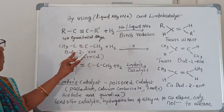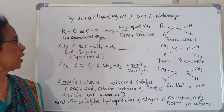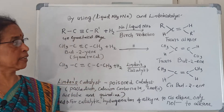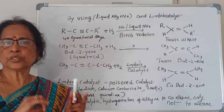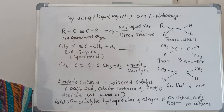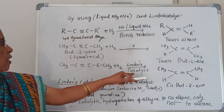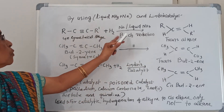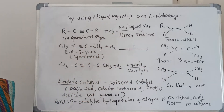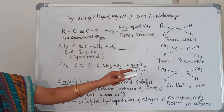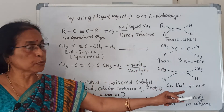So remember: sodium and liquid ammonia gives trans-alkene, and Lindlar's catalyst gives cis-alkene — that is very, very important. With Lindlar's catalyst the product is cis-alkene, and with sodium and liquid ammonia the product is trans-alkene. Here it is trans-but-2-ene and here it is cis-but-2-ene.